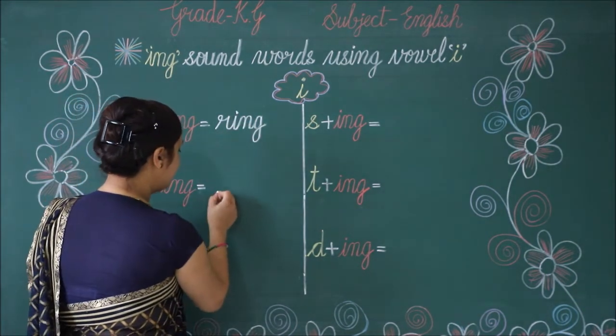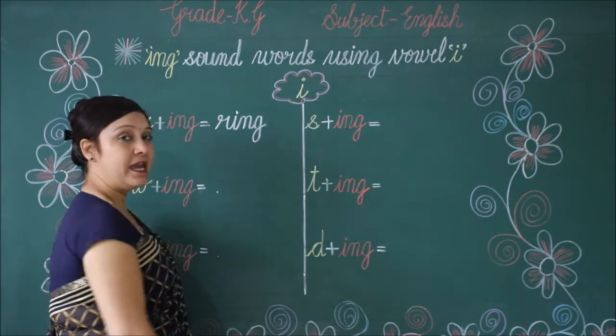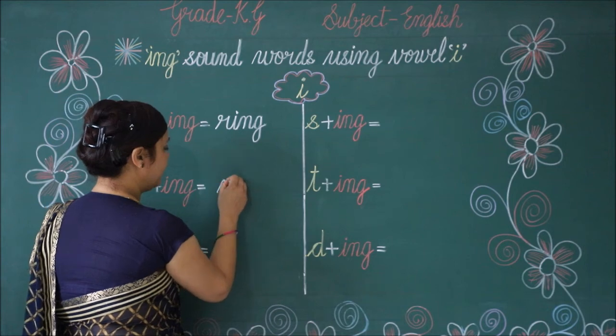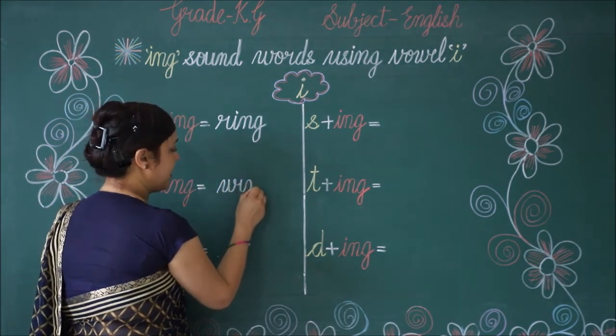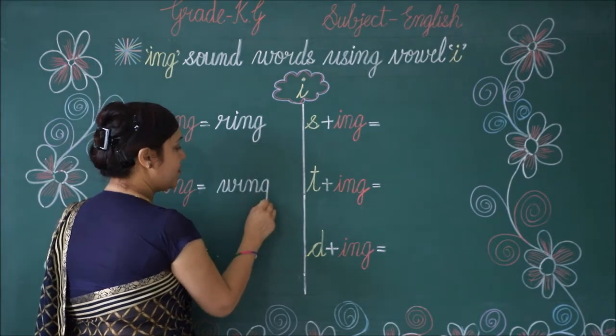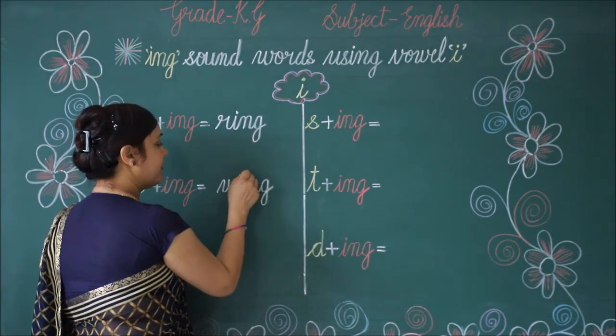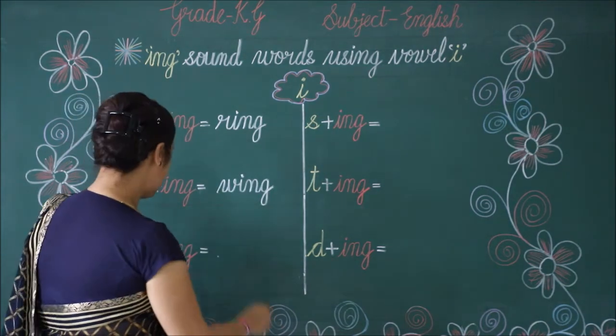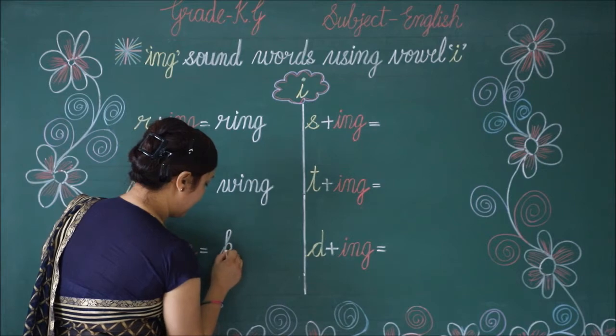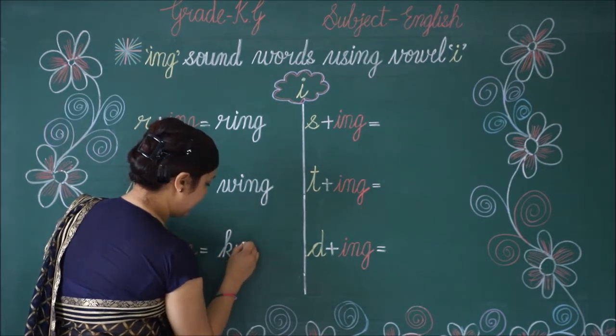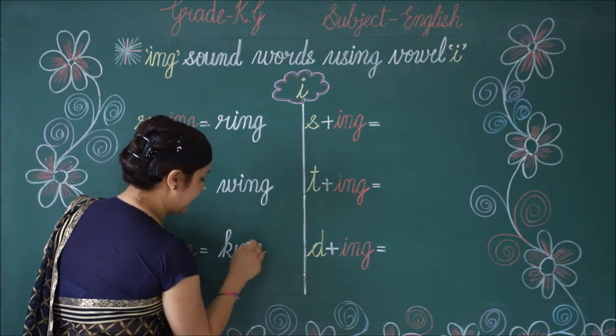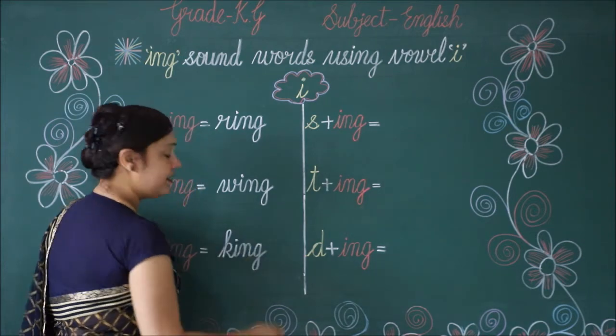Ring. R-I-N-G. Ring. Next is W-I-N-G. W-I-N-G. Wing. Next is K-I-N-G. K-I-N-G. King.